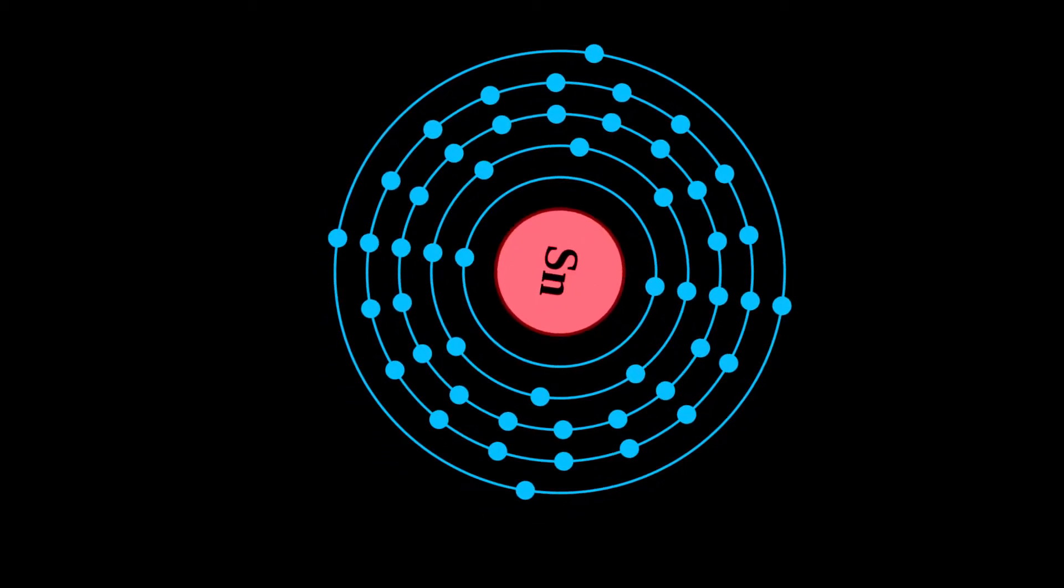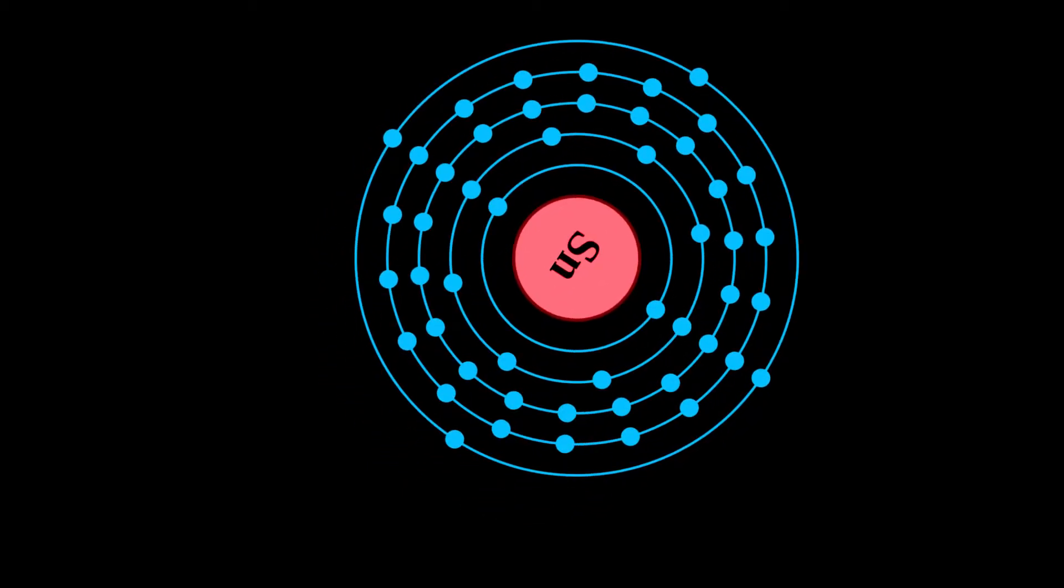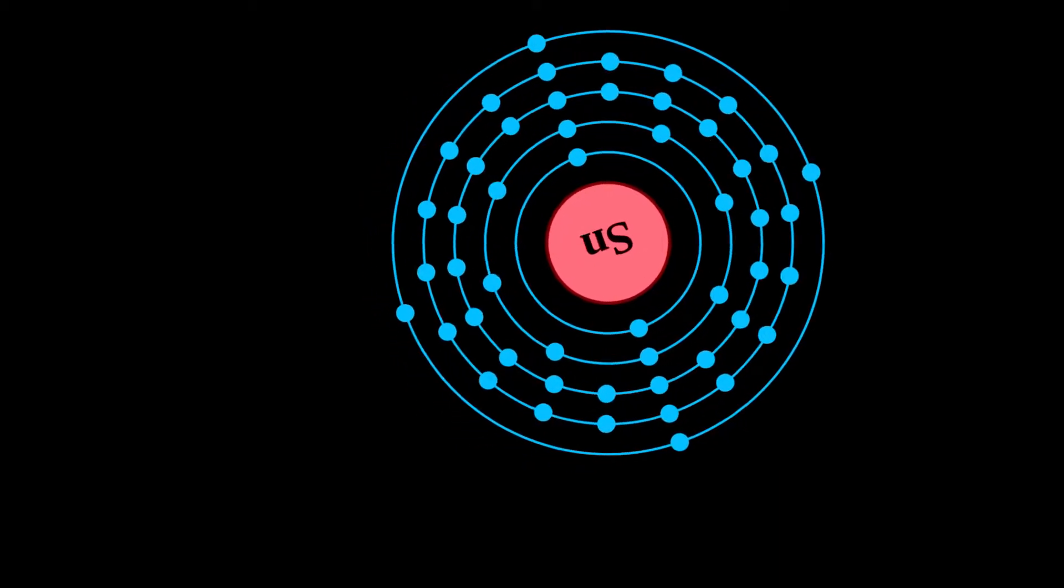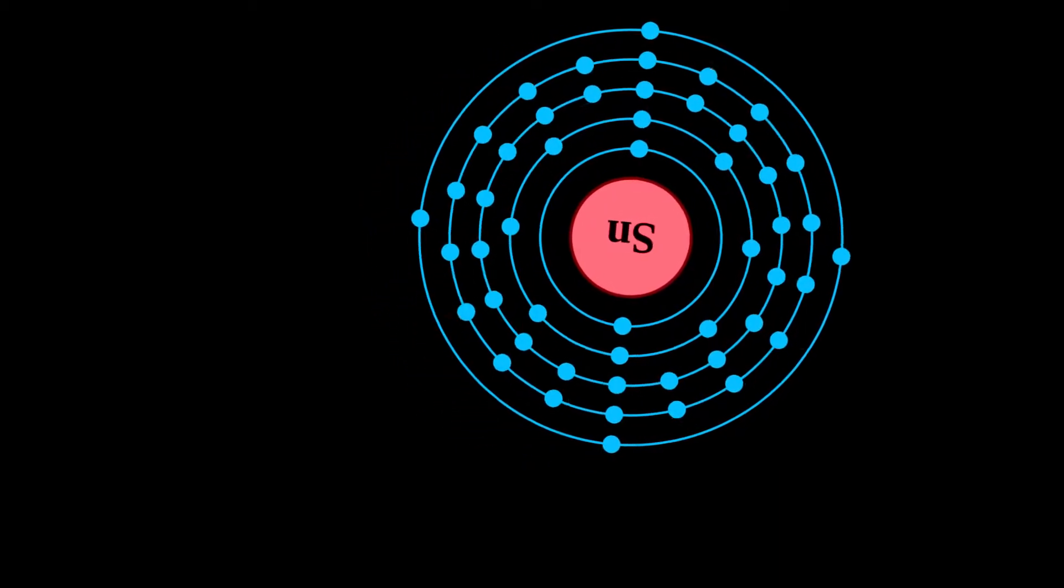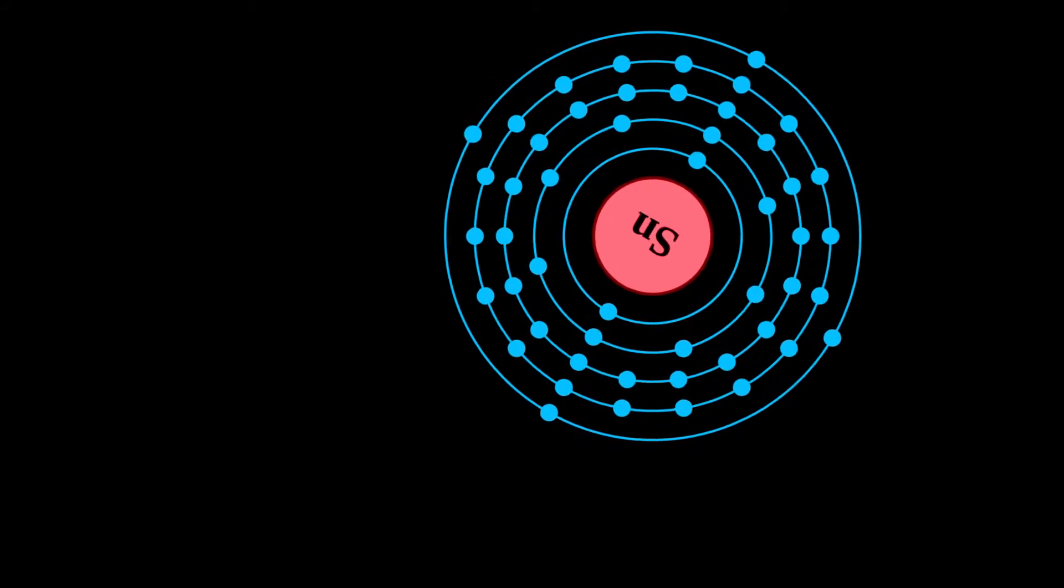It is a post-transition metal in group 14 of the periodic table of elements. It is obtained chiefly from the mineral cassiterite, which contains stannic oxide.